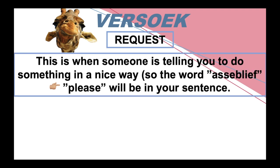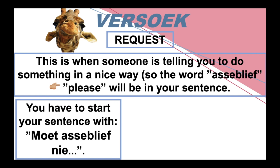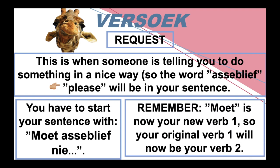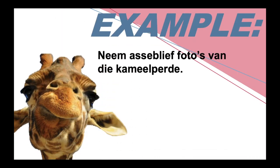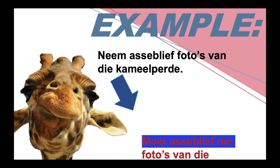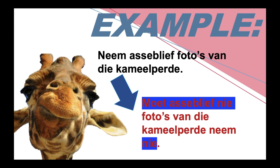Now we're going on to the last thing: a versoek — a request. This is when someone is telling you to do something in a nice way. It's still an instruction, just said with a little bit more manners. The word 'asseblief' — please — will be in the sentence. You have to start your negative sentence with 'moet asseblief nie'. The 'asseblief' also needs to be there because it's still a request, just in negative form. 'Moet' is now your new verb one, so your original verb one will now be your verb two. Similar to an instruction, it's just that we've split up 'moet' and 'nie' and put 'asseblief' in the middle. Example: 'Neem asseblief foto's van die kameelpaarde' becomes 'Moet asseblief nie foto's van die kameelpaarde neem nie.'